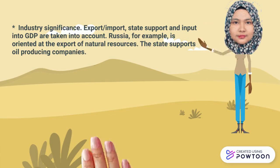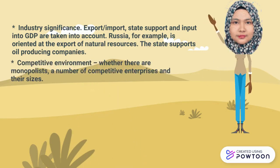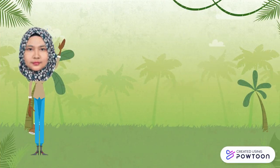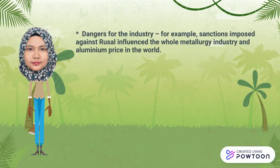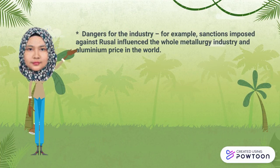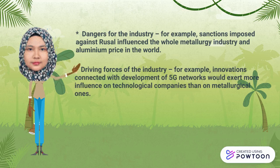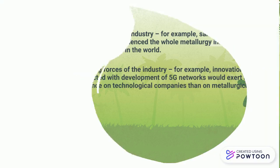The second factor is competitive environment — this is to know whether the industry is monopolized, the number of competitive enterprises and their sizes. The third is dangers for the industry; for example, sanctions imposed against Russia influence the whole metallurgic industry and aluminum prices in the world. The last one is driving forces of the industry; for example, the development of 5G networks will exert more influence on technological companies.